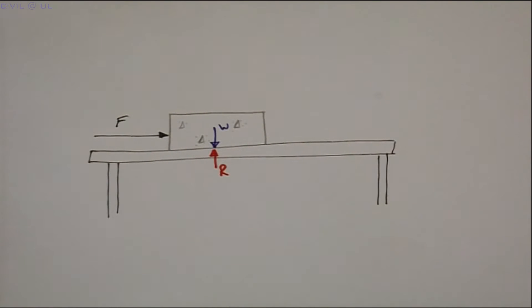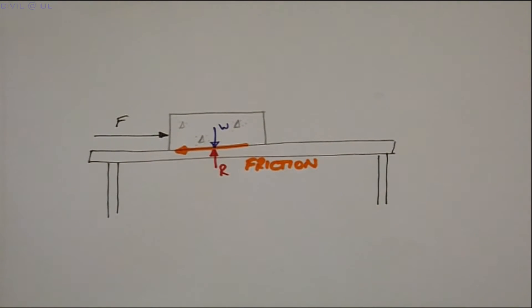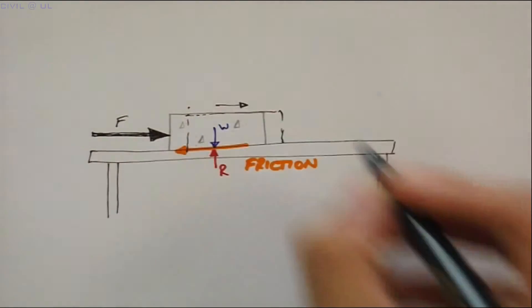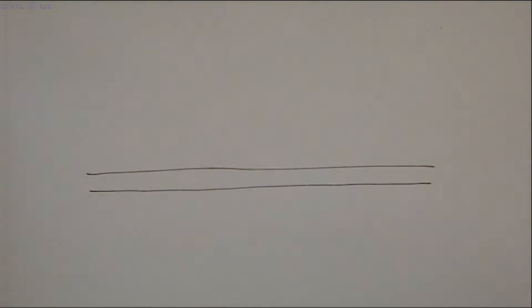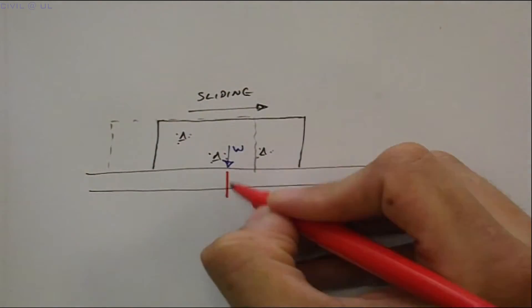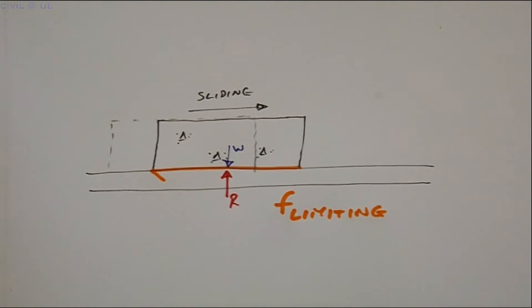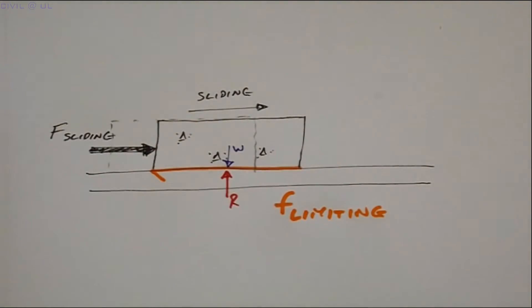Initially, the block resists due to the friction between the underside of the block and the table. If we persist however, and continue to increase the pushing force, the block will eventually slide. This occurs when the frictional resistance is overcome. If we examine what happens at the point when the block slides, the full frictional resistance here is mobilised, but it is no longer sufficient to resist the increasing sliding force, so the block moves.